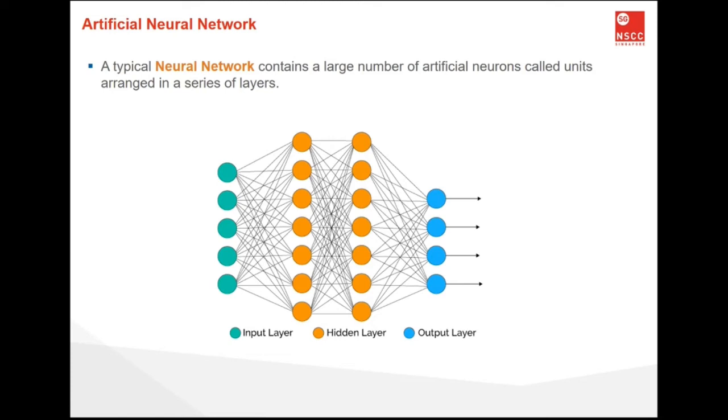The final hidden layer is called output layer, and it is responsible for outputting a value or vector of values that correspond to the format required for the problem. The choice of activation function in the output layer is strongly constrained by the type of problem that we are modeling. And we will talk about activation function later.